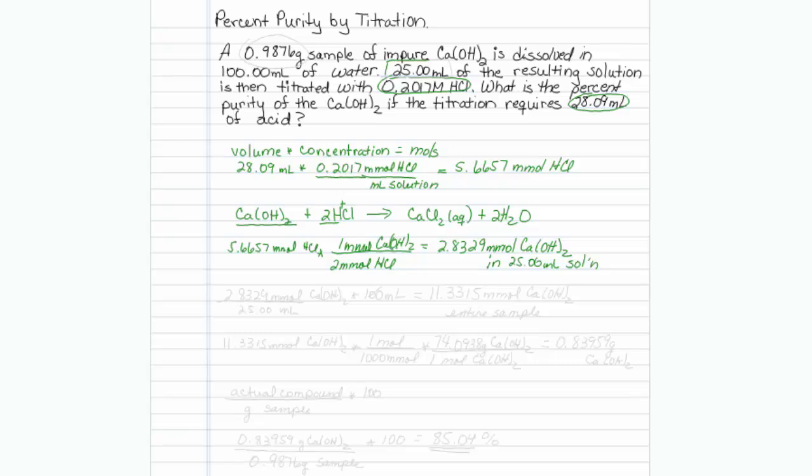Because remember, we didn't titrate the whole thing. We titrated 25 milliliters. So there is going to have to be an adjustment to figure out how much was in the total sample. We had 2.8329 millimoles, and that's in 25 mils of solution of calcium hydroxide. We just have to remember that the entire sample size was 100. So we're essentially going to have to multiply this by 4. When we do that, we discover that we had 11.331 millimoles of calcium hydroxide in the entire sample.